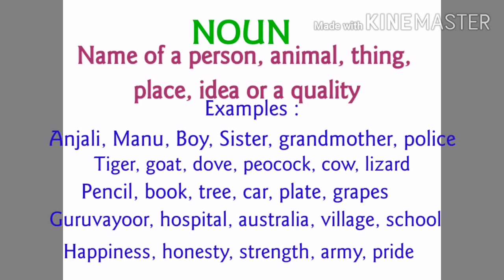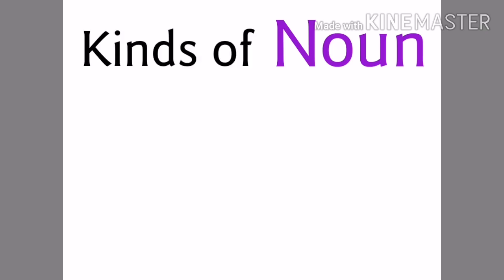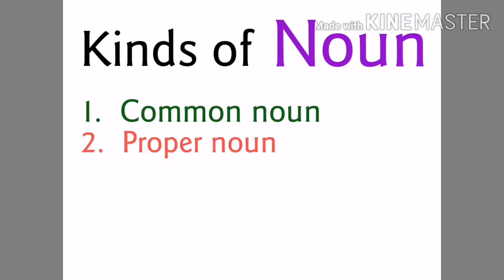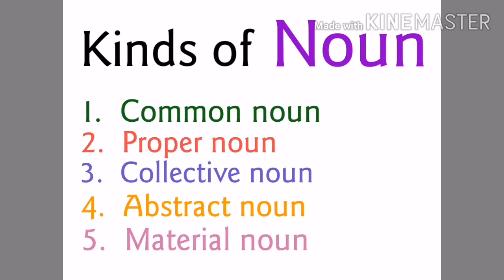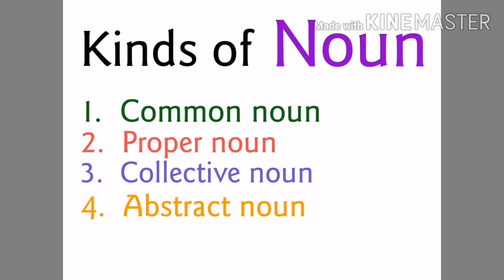So for each and everything we have given names — that is generally called a noun. Now let's see the different kinds of noun. The first one is common noun, the second is proper noun, the third is collective noun, the fourth is abstract noun, and the fifth is material noun. So generally there are five kinds of noun, but today we are going to learn four kinds.